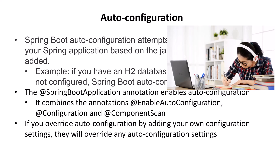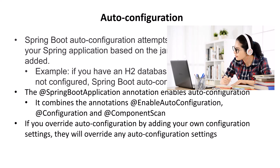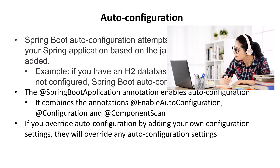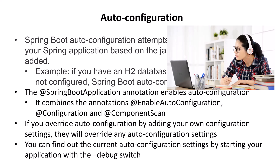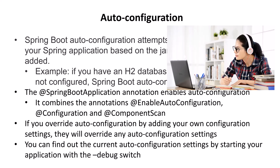Sometimes auto-configuration can seem like magic, and it may not always be clear what the current setting of an item is. You can find out the current auto-configuration settings of your application by starting it with a --debug switch on the command line.